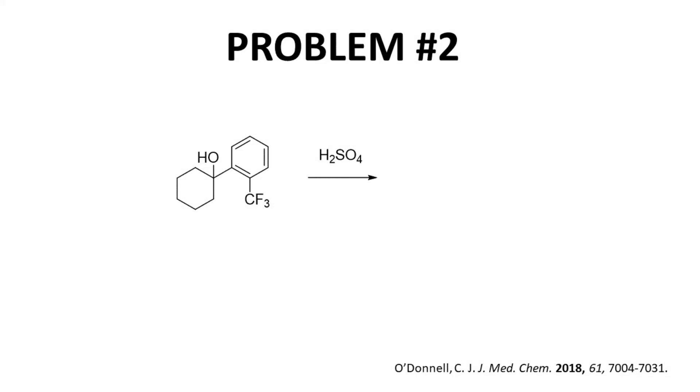Problem two. Here we start with an alcohol. There is no good leaving group. All we have over the arrow is strong acid. Perfect. We can protonate the alcohol to make a leaving group. Notice that we don't have a nucleophile or base present, so the tertiary leaving group can leave and form a carbocation intermediate. Without a nucleophile present, we will lose a beta hydrogen and form an alkene.